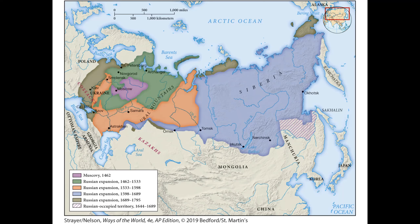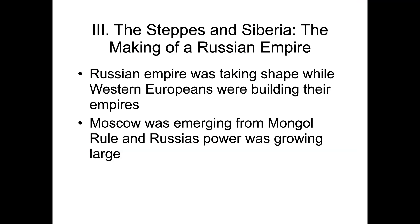As we go into the expansion into Siberia, Russia starts as a small state centered around Moscow. The Russian Empire takes shape while Western Europeans are building their empires too. It emerges from Mongol rule, and Russia's power begins to grow around 1480. Russia starts conquering neighboring cities, and over three centuries they grow into this massive empire visible on the map.